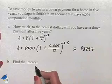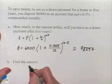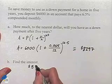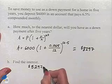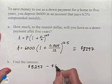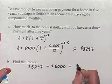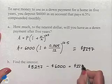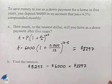So what will be the interest? We'll end up taking that amount, A, and subtracting from it the principal of $6,000 to come up with $2,297 in interest.